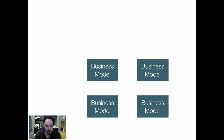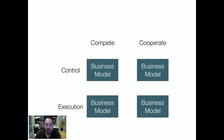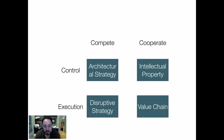Last time we distinguished business models on the basis of two dimensions: whether you compete or cooperate with established firms in your market, and whether you seek to control or engage in execution as your primary driving force behind the business. There were trade-offs associated with each of those decisions, giving rise to distinctive business models. Competing with established firms while focusing on execution was a disruptive strategy. Focusing on execution while cooperating with existing firms is a value chain strategy. And if you sought to control assets and cooperated with established firms, you're in an intellectual property strategy.